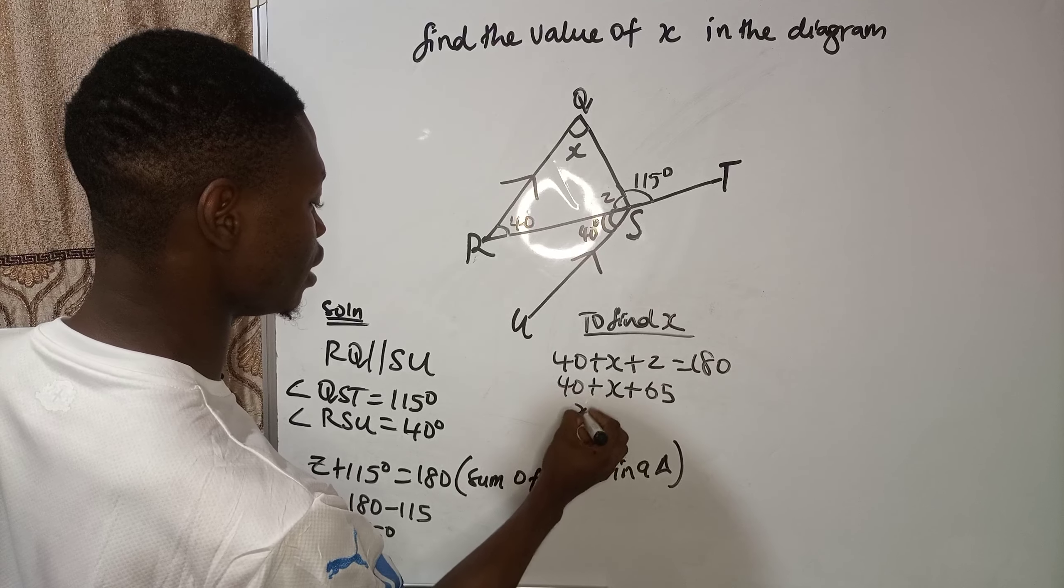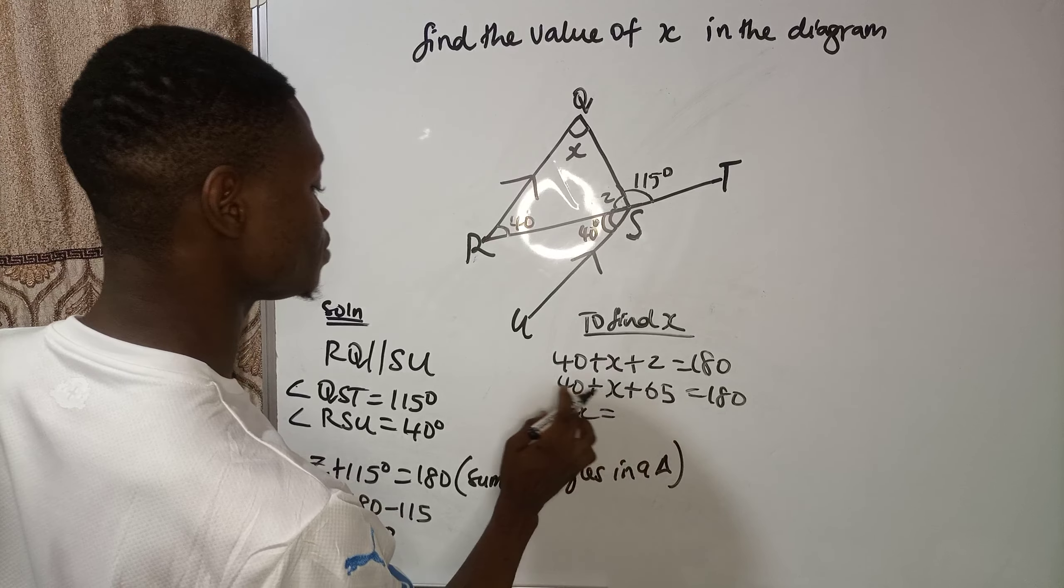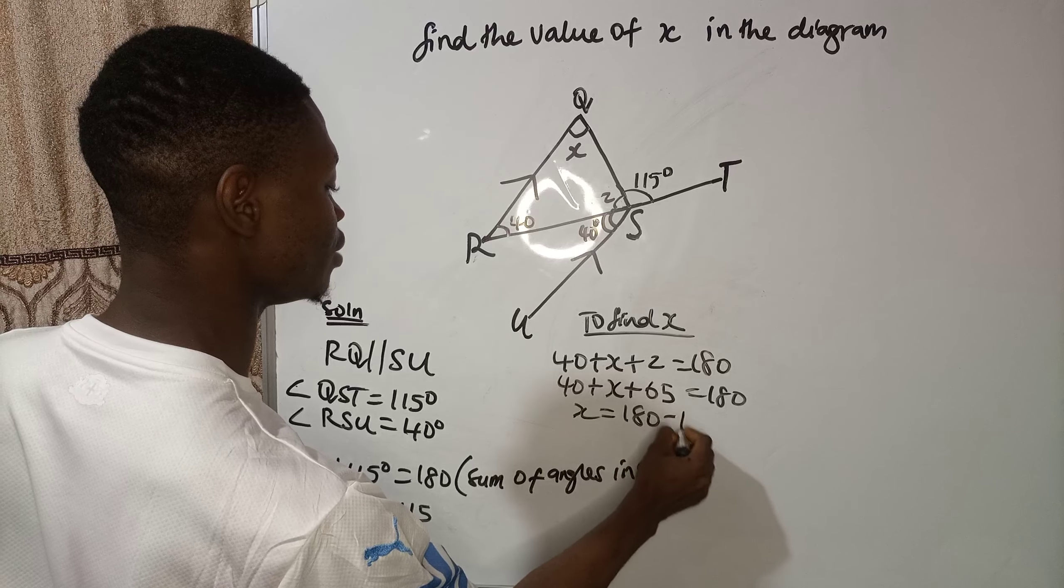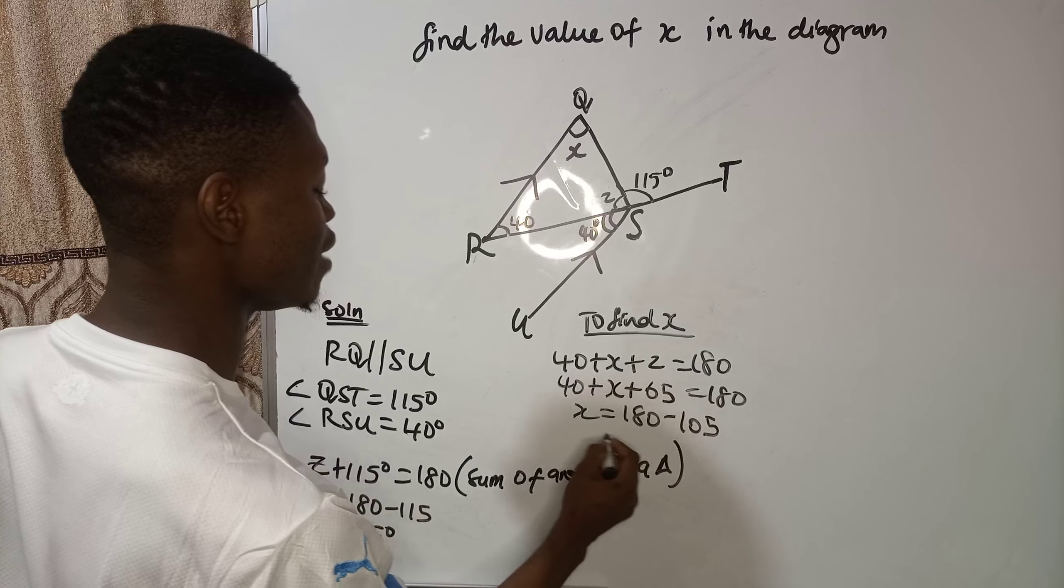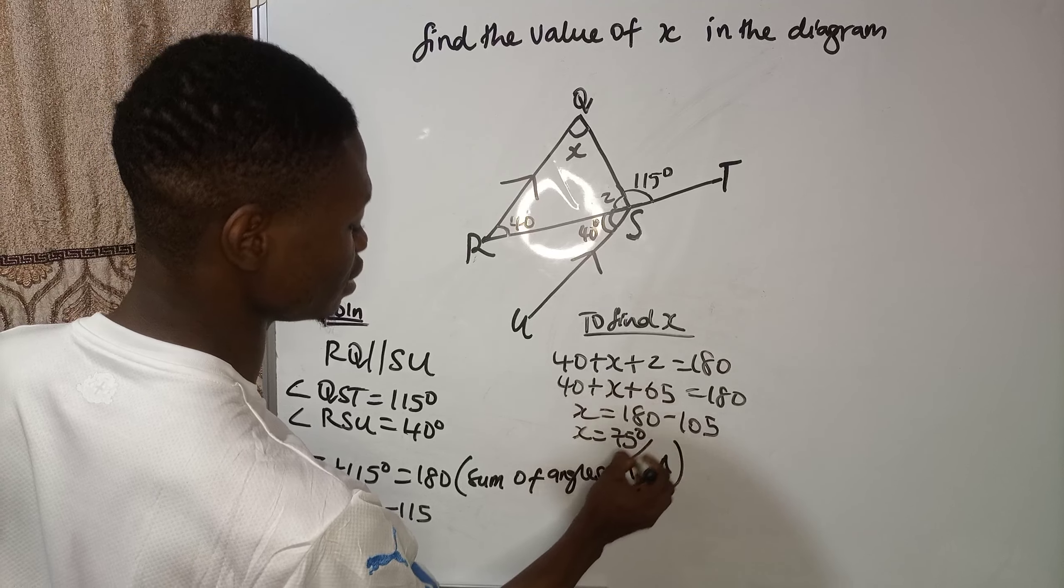Plus X is equal to 180. X is equal to 180 minus 105. Our X is 75 degrees.